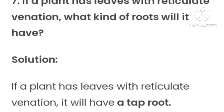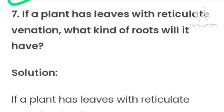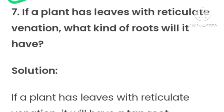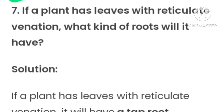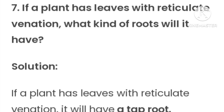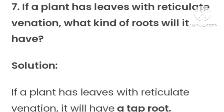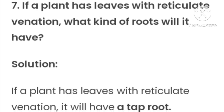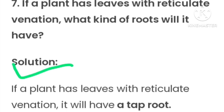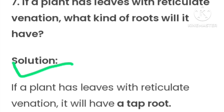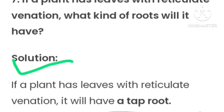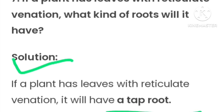Question number seven: If a plant has leaves with reticulate venation, what kind of roots will it have? This is the opposite of question six. If a plant has leaves with reticulate venation, it will have a tap root.